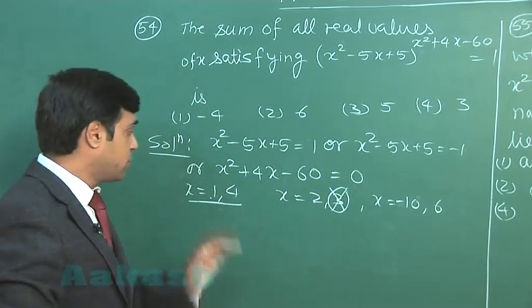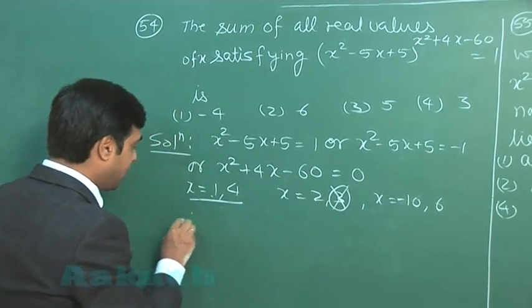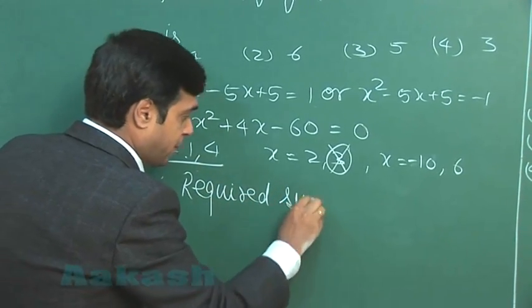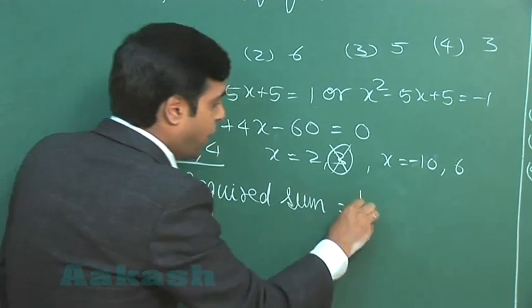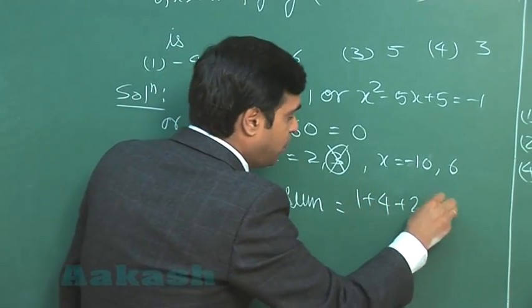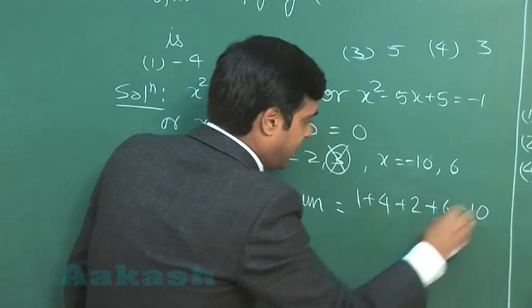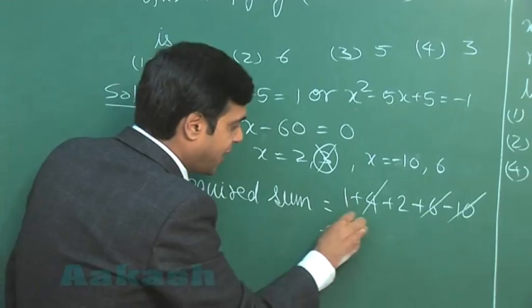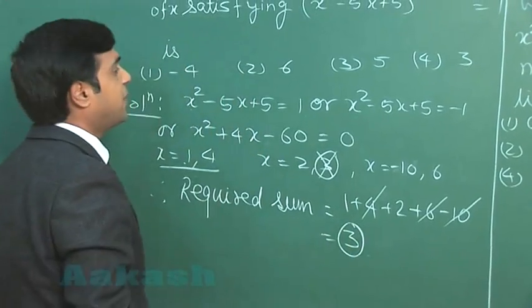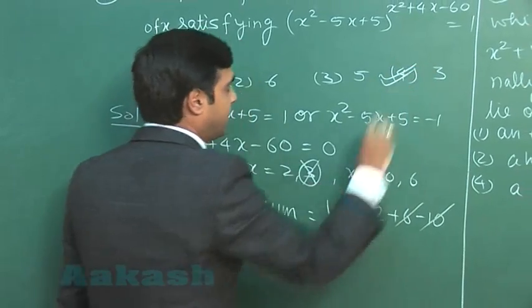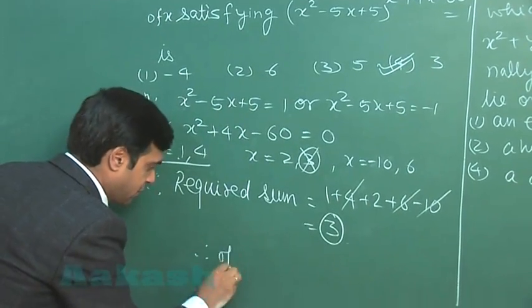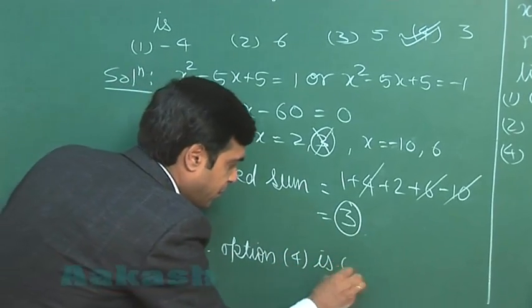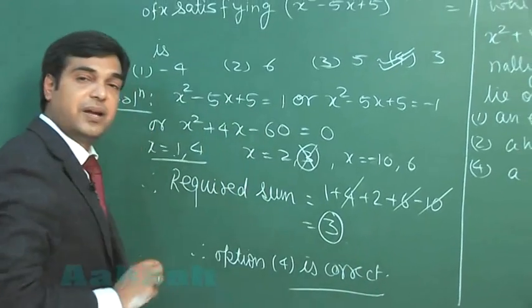This is clear. So adding all, we find the required sum as 1 plus 4 plus 2 plus 6 minus 10. So this 10 is cancelled out, and we are getting the result as 3. From the given options, we can see option 4 is correct.